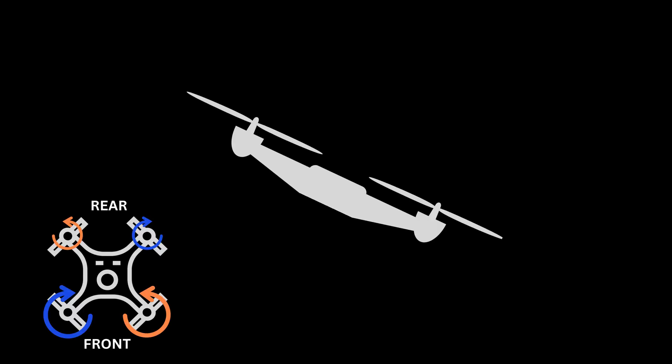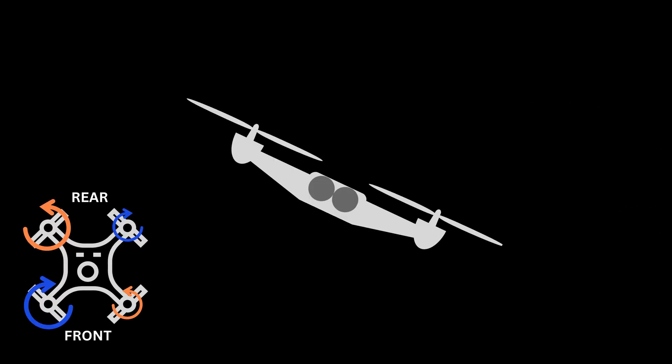To move backward, the drone accelerates the front propeller and slows down the rear propeller. Likewise for motion to the right and left.